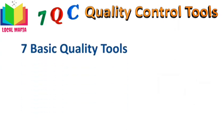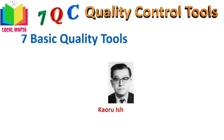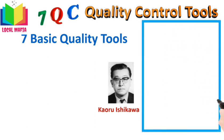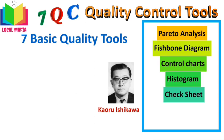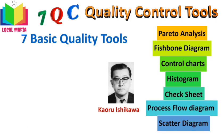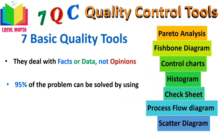Kaoru Ishikawa developed these 7 basic QC tools so that the average person can analyze and interpret data. The 7 basic QC tools are Pareto analysis, fishbone diagram, control charts, histogram, check sheet, process flow diagram, and scatter diagram. They are called basic because they are suitable for people with little formal training in statistics and can be used to solve the vast majority of quality-related problems. They deal with facts and data, not opinions. It is said that 95% of the problems can be solved using these 7 basic QC tools.